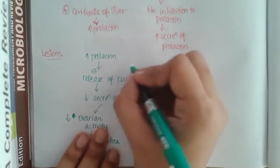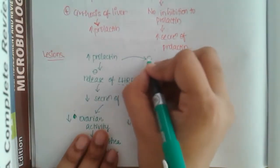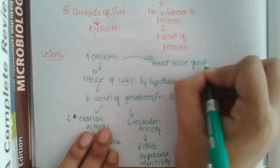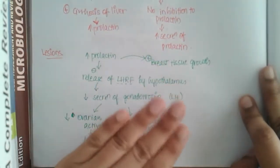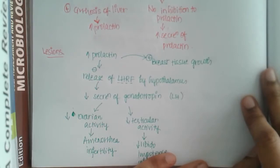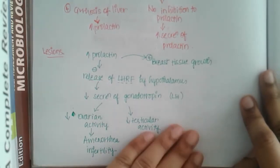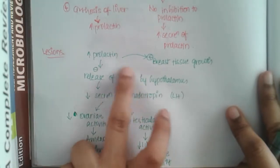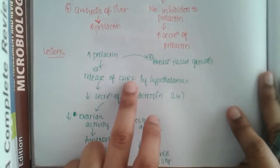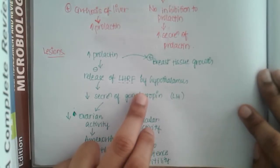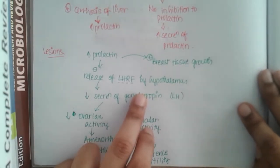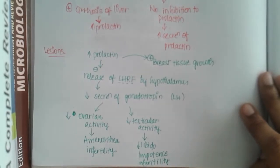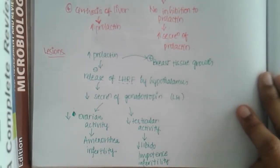Increased prolactin also directly activates breast tissue growth. The main mechanism is that increased prolactin causes inhibition of LHRF through a negative feedback mechanism — because LH normally stimulates prolactin secretion, increased prolactin inhibits this, leading to decreased gonadotropins and decreased ovarian and testicular activity.